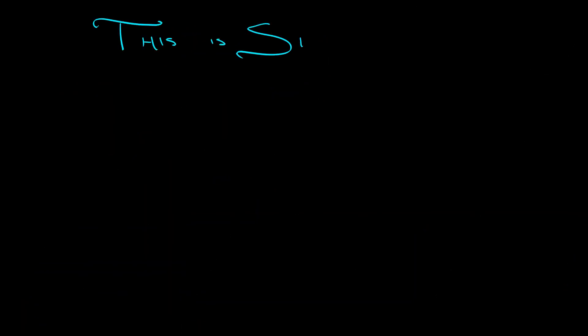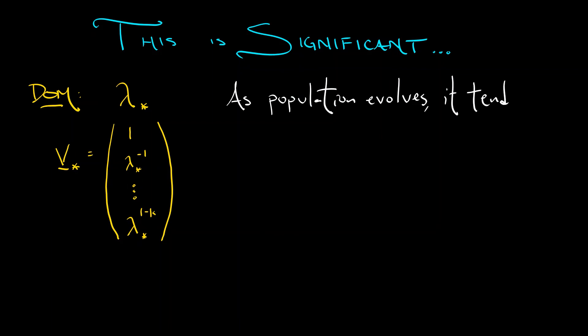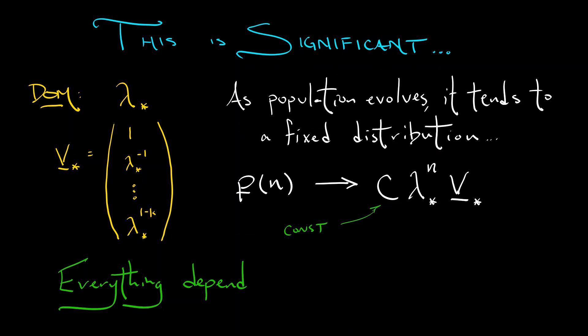Why? Why is this so significant? Because as the population evolves, it's going to tend to a fixed distribution. Remember how dominance works in a dynamical system like this. In a linear dynamical system, everything tends to some multiple of the dominant eigenvalue to the nth power times the dominant eigenvector. So p sub n is tending to this dominant eigenmode. And that means that over time, the population distribution looks like this positive dominant eigenvector v star. You can see exactly how the population distribution spreads over the different age cohorts. Everything depends on the value of this dominant eigenvalue lambda star.